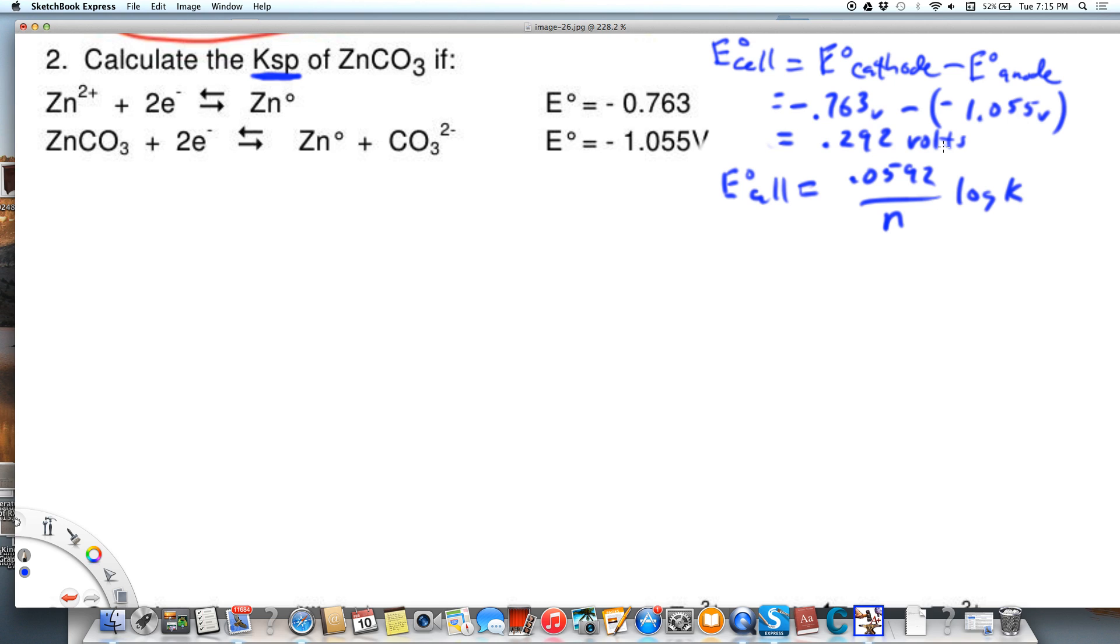When we look at this, zinc is going to get reduced. That's our cathode. And this then is our anode, but we've got to flip it around because zinc is at the anode. So we're going to start off by writing this same equation.